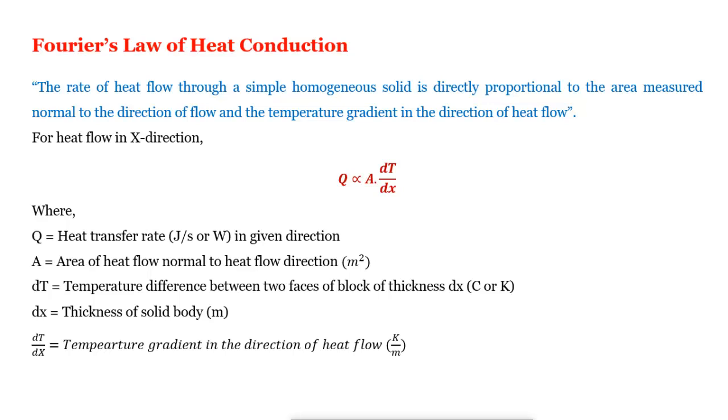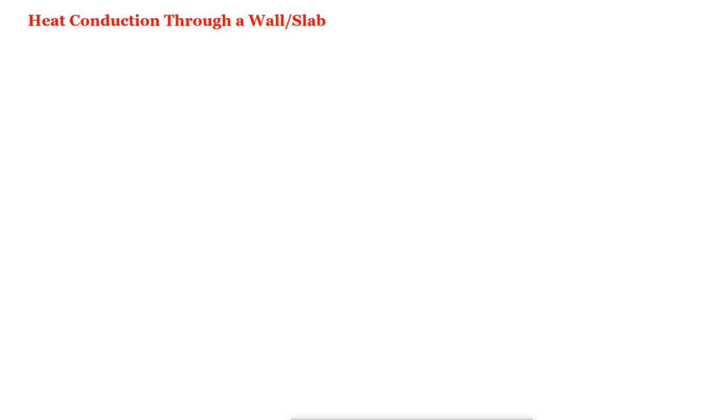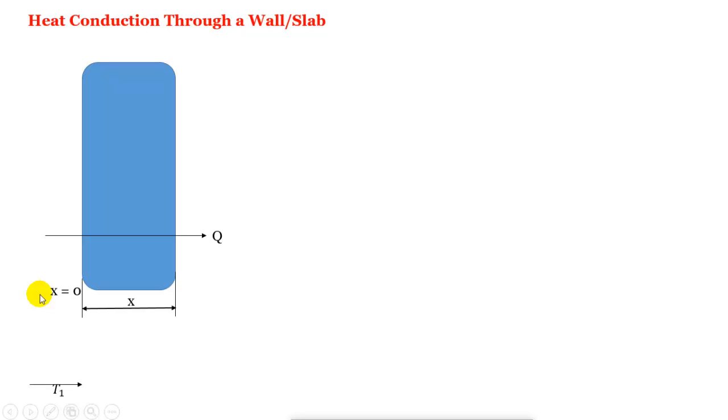Now we study the heat conduction through a wall or slab. Consider a wall of surface area A, thickness x as shown in this figure, and the heat flowing Q in this direction. At x equal to 0, the temperature will be T1. At x equal to x, the temperature will be T2.